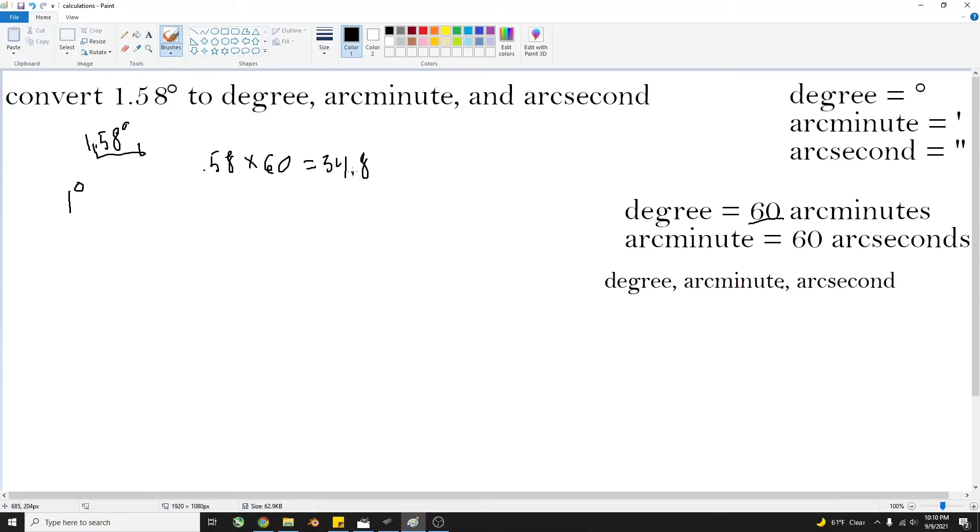So now if you just take the decimal point over, you'll get 34. And these will be the arc minutes, which you'll use with a single quote.